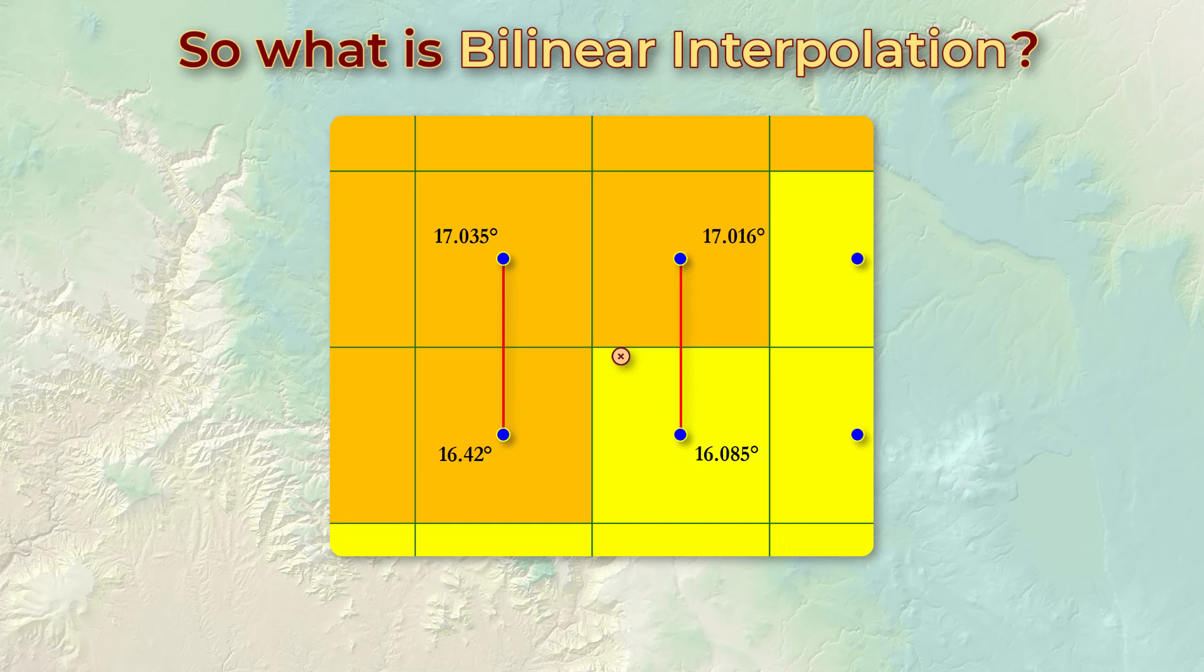We now interpolate the slope values along these two lines at the y coordinate of our sample point. So this y coordinate is closer to the southern cells than the northern cells, and therefore our interpolated values are a little closer to the southern slope values than the northern slope values.